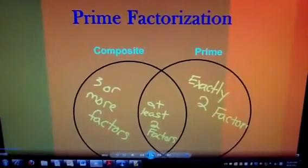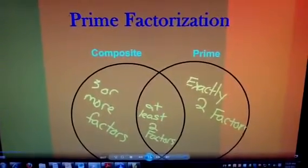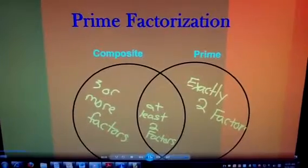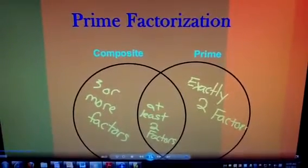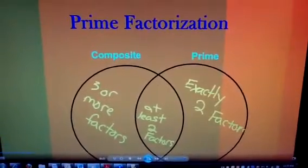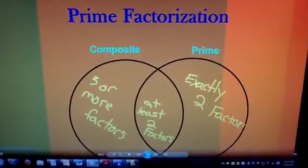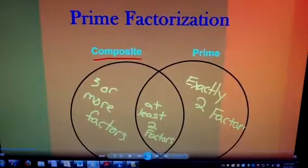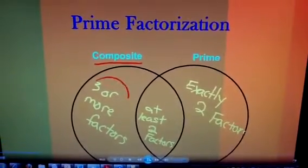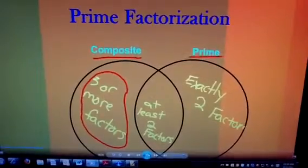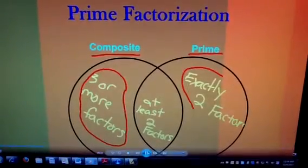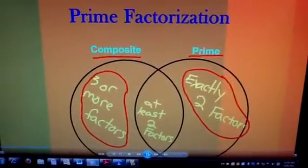Now, prime factorization is when you take a composite number and you write that number as a product of prime numbers. So we have to recall again what a composite number is as well. A composite number has three or more factors, and a prime number has exactly two factors.